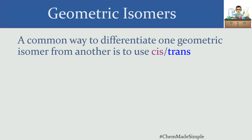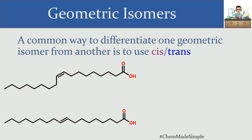A common way to differentiate one geometric isomer from another is to use the terms cis and trans — whether things are together or whether they are far apart. Drawing an imaginary line through the pi bond, I look at where the connecting carbons are relative to this line. Both carbons are below the line, so they're on the same side — that's the cis isomer. In the other version, the carbons are on opposite sides, making it the trans isomer. This is where the terms cis and trans fatty acids come from.